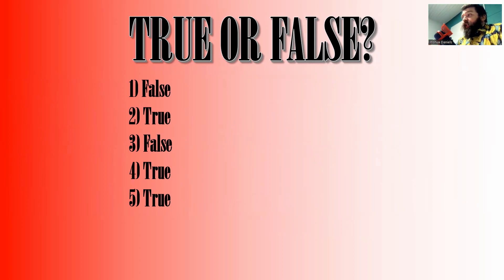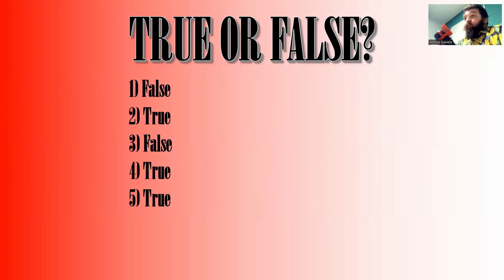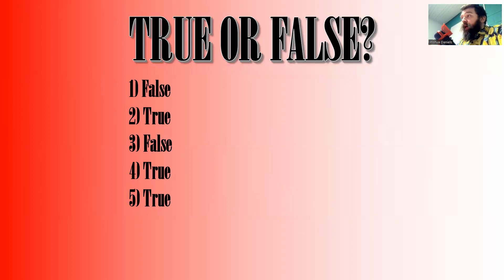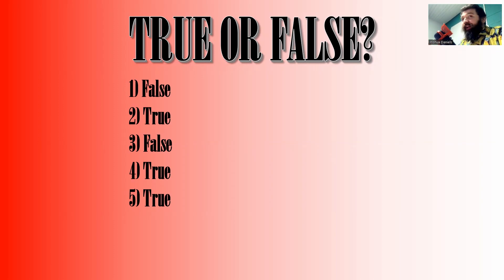True or False answers: number one — Blackbeard died from eating poisoned swan — that is false; he actually died from gunshots and stab wounds. Number two — Leif Ericsson was the first European on North America — that is true, around 1000 AD (Columbus was 1492). Number three — the flushing toilet was designed by Sir John Crappington — that is false; it was Sir John Harrington. Number four — cocaine was used by soldiers in the First World War — that is true, mainly for medicinal purposes. Number five — the deadliest earthquake was in China in 1556 — that is true; it was in the Shaanxi province and killed an estimated 830,000 people.